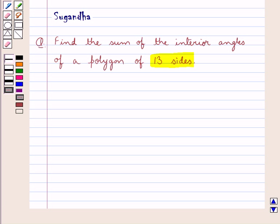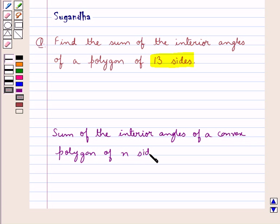Before moving on to the solution, let's see what is the sum of the interior angles of a convex polygon of n sides. This is equal to 2n minus 4 right angles.